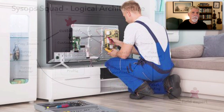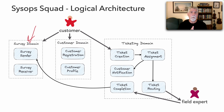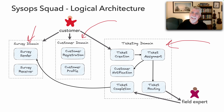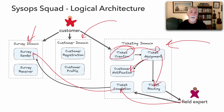The SysOps Squad is a trouble ticket system where customers can enter a trouble ticket and customer-facing experts go to your home or office and fix your problem. In those three lessons we constructed this logical architecture showing how the system works and how it's constructed. We have three domains: a survey domain with sender and receiver components, a customer domain where customers can register and manage their profile, and a ticketing domain where tickets are created, assigned, and routed to the expert in the field. The customer is notified the expert is on the way, the expert completes the ticket, and then a survey is sent to the customer.